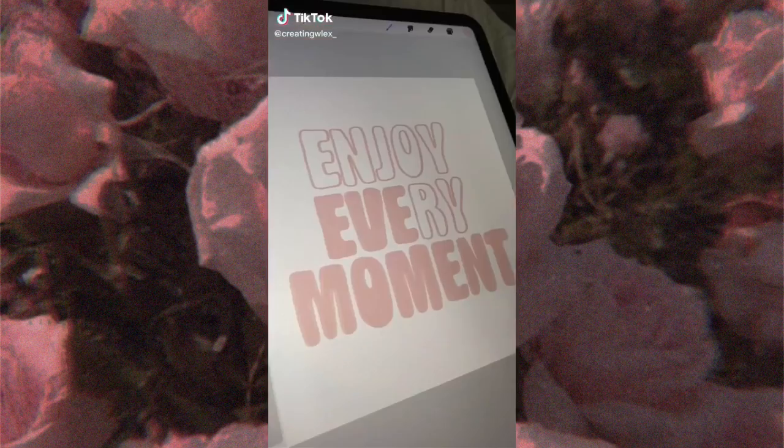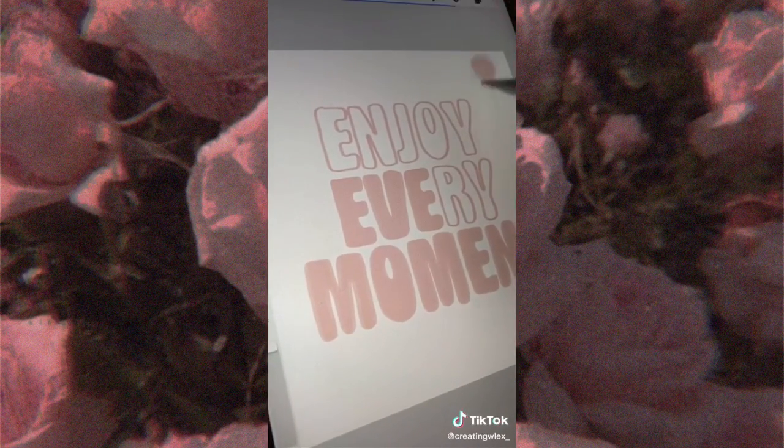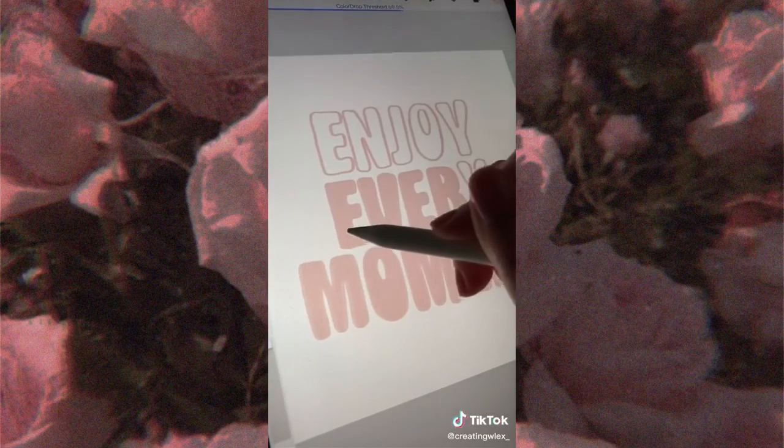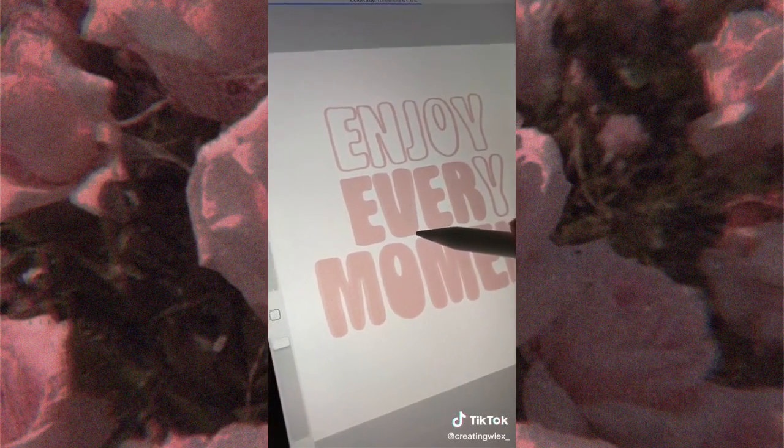I've been using Procreate for a while and this is a tip I just learned. Whenever your shape doesn't fill the way you want it to, all you have to do is adjust the color threshold. You do this by holding and sliding and you can see the little bar at the top. Make sure you don't have any lines and it fills perfectly.